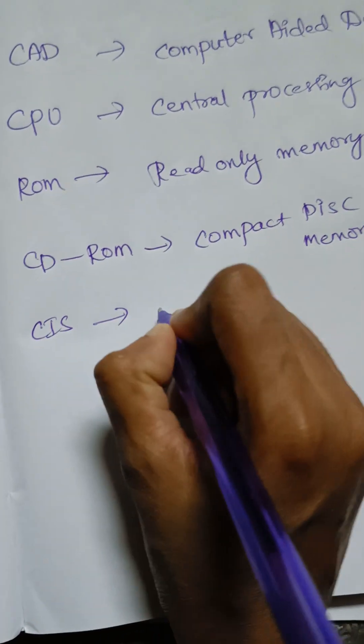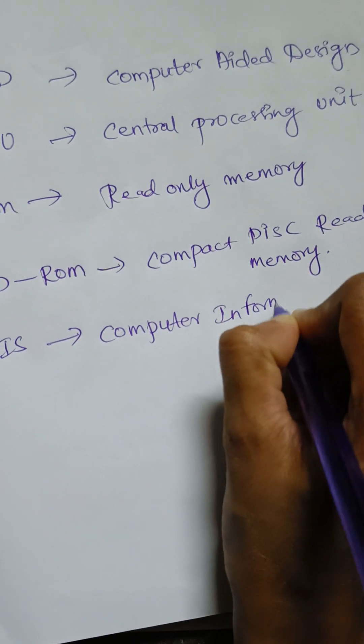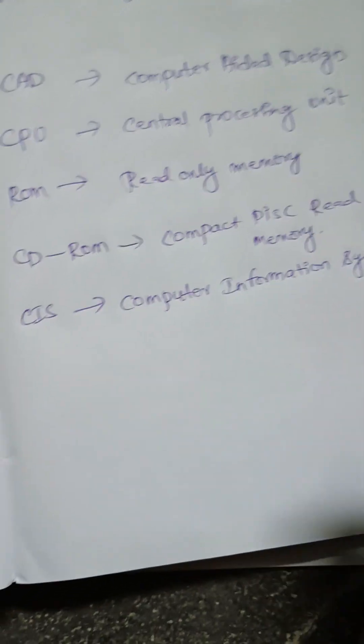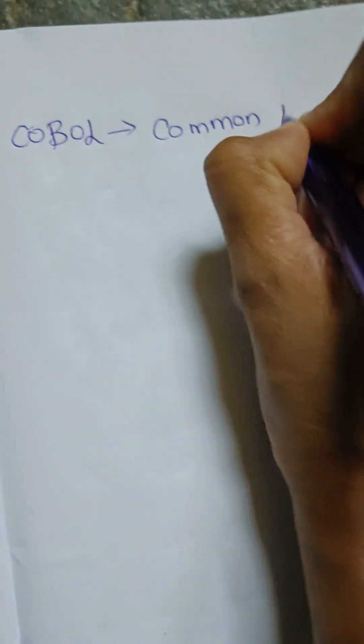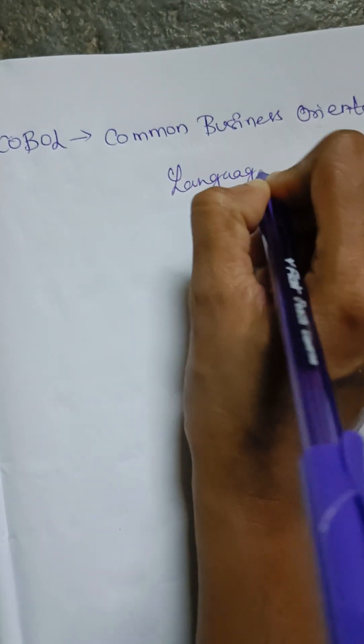Now, next one is CIS — CIS means computer information system. The other one is COBOL — that means common business oriented language.